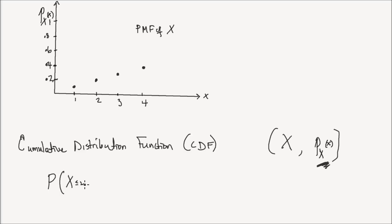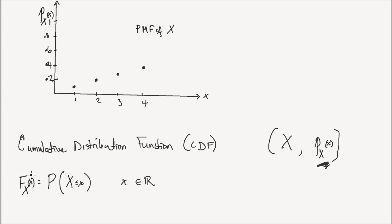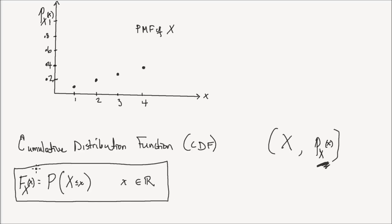What if I ask you to find the probability that the random variable x takes a value less than or equal to little x, where x could be any real number? This probability function is actually what we call the CDF of the random variable x, and it's denoted by capital F of x of little x.